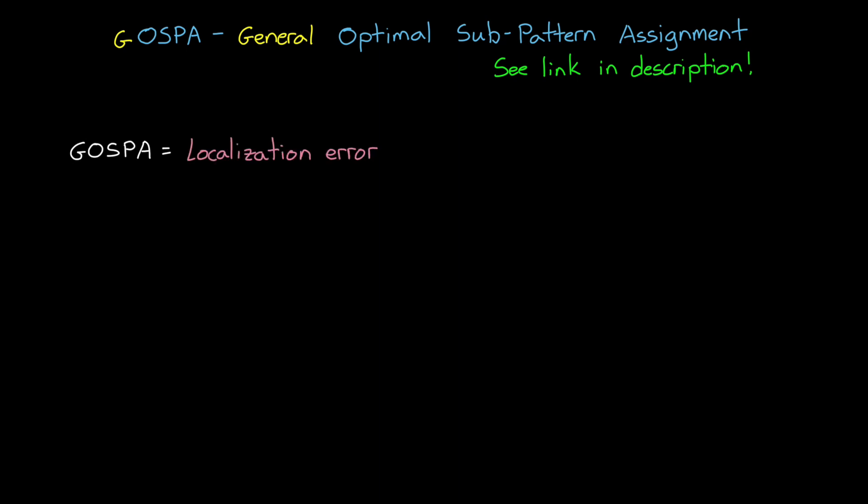Now capturing localization error and missed and false tracks into a single number is the idea behind OSPA, the Optimal Subpattern Assignment Metric, and a generalized version of it called GOSPA. Now the details of these algorithms and why you may choose one over the other can be found in the references that I linked to in the description of this video, but here is a very basic introduction to GOSPA. Informally, GOSPA can be defined as the sum of the localization errors for the targets that were detected, plus a penalty of one half of the cutoff distance for every missed and false track.